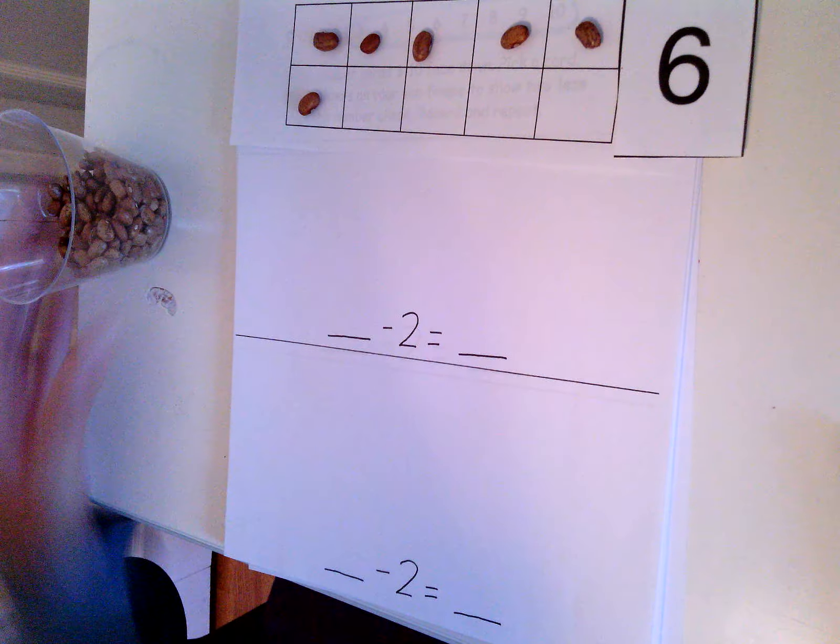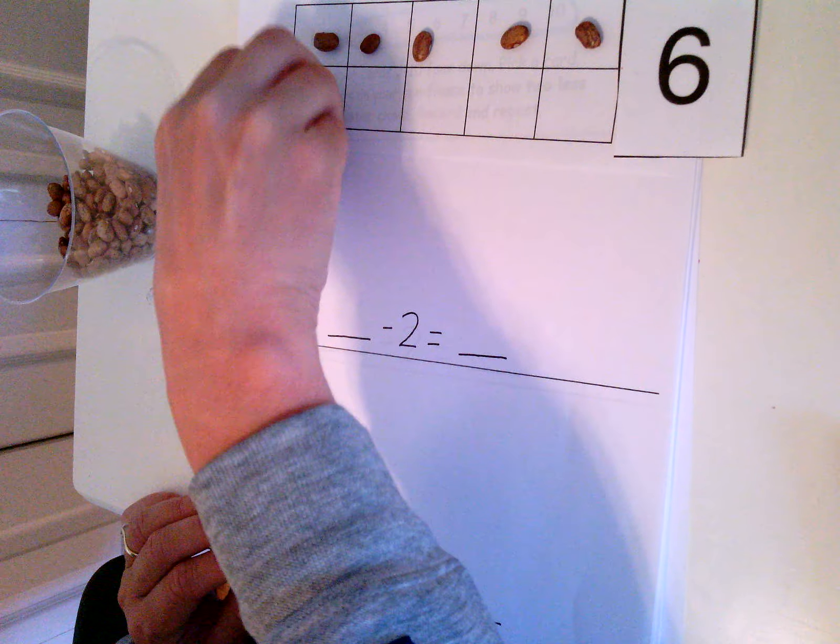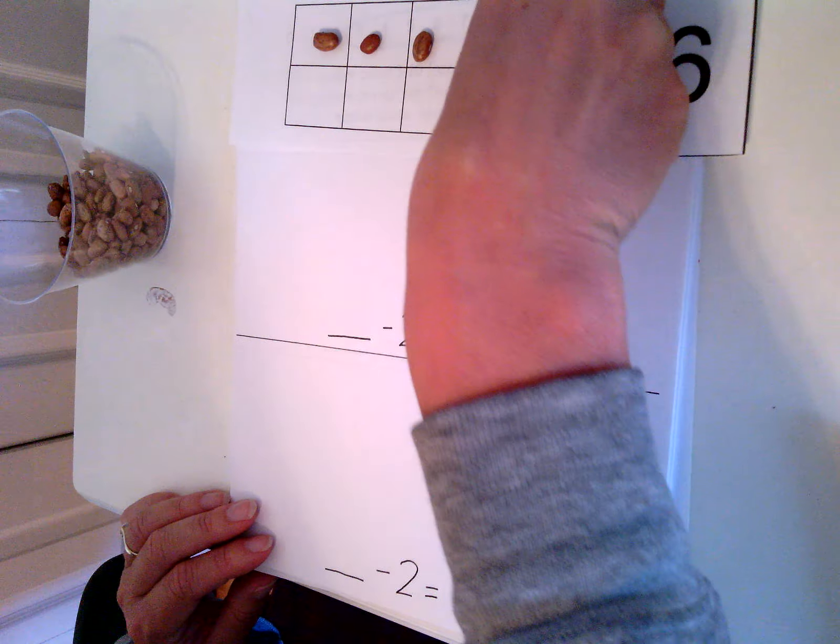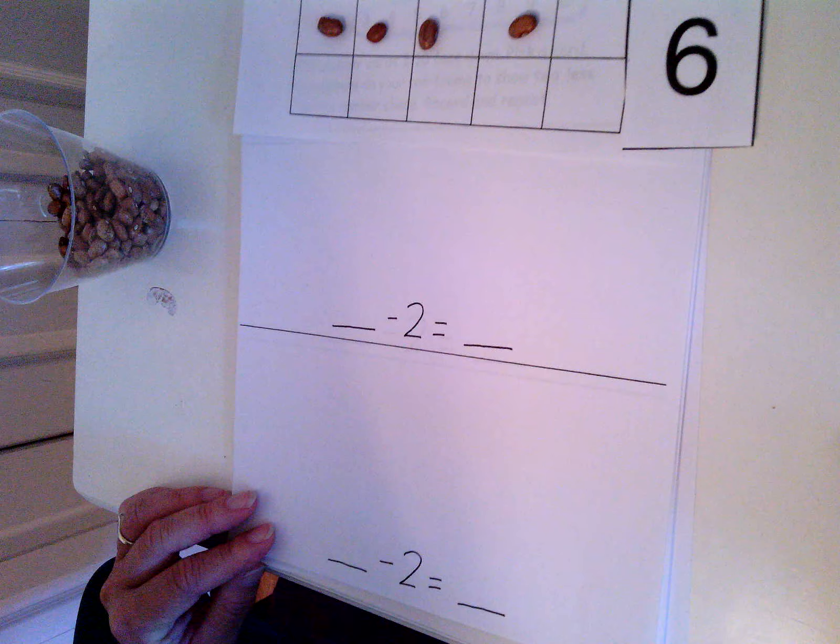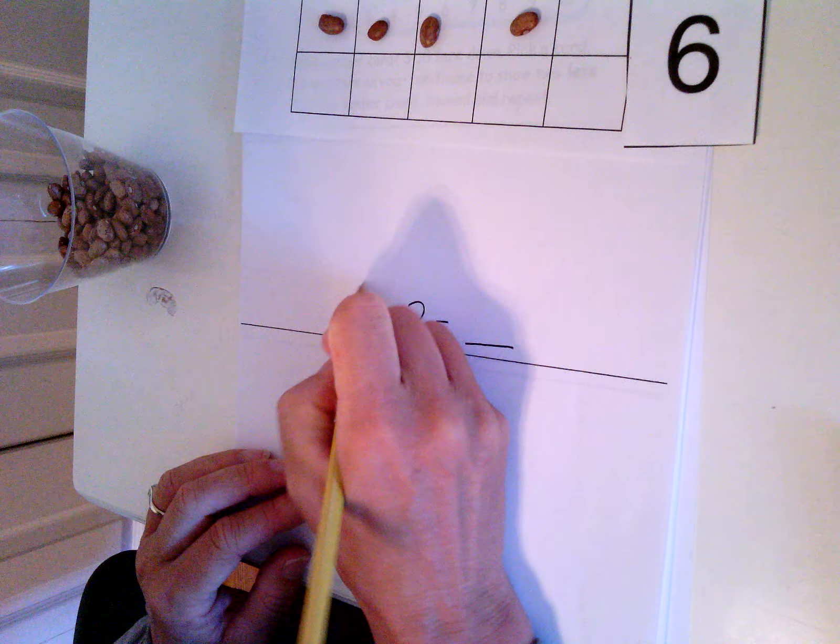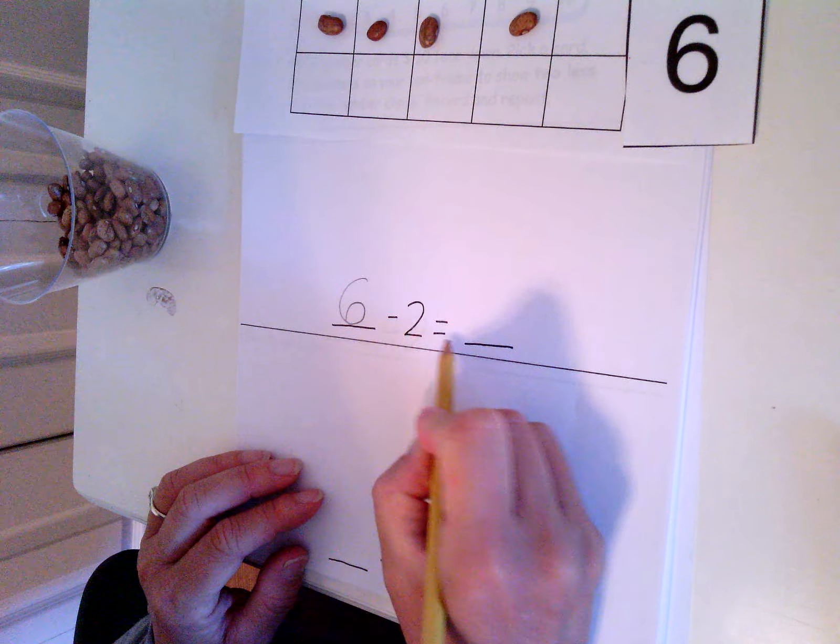I need to take two counters off: one, two. And now I have one, two, three, four. Six minus two equals four.